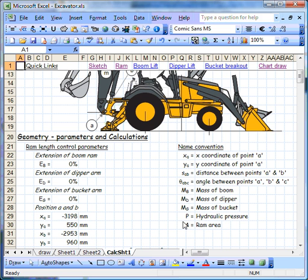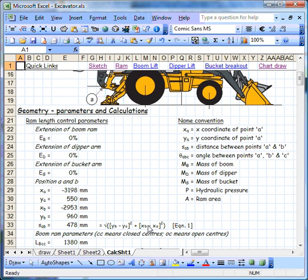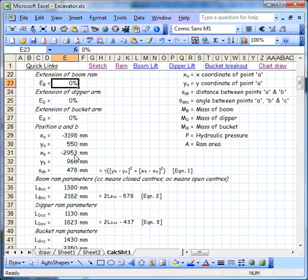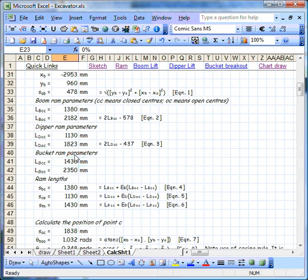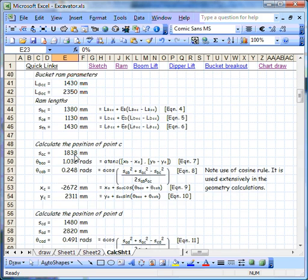Now, the calculations themselves are actually relatively simple. We need to set the extension of each of the rams and then we determine the geometry by use of simple trigonometry.